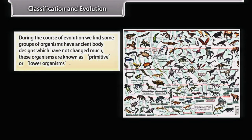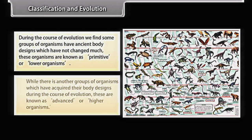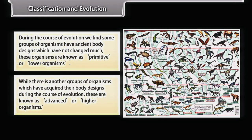During the course of evolution, some groups of organisms have ancient body designs which have not changed much. These organisms are known as primitive or lower organisms. There is another group of organisms which have acquired their body designs during the course of evolution; these are known as advanced or higher organisms.